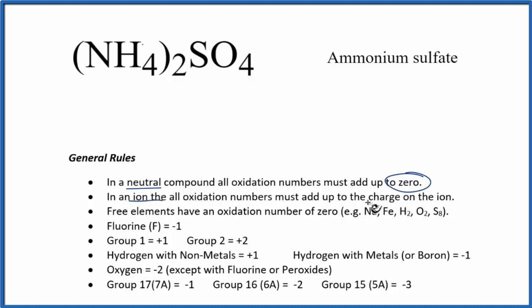So this is the ammonium ion, NH4. This is the sulfate ion, SO4. We can look that up or have it memorized. Ammonium, the whole thing, has a plus one oxidation number. The sulfate has an oxidation number of minus two. Its charge is two minus, so the oxidation number is the same as the charge.